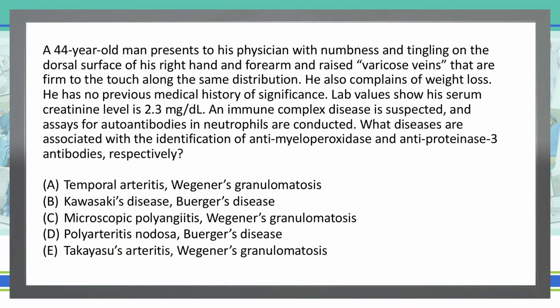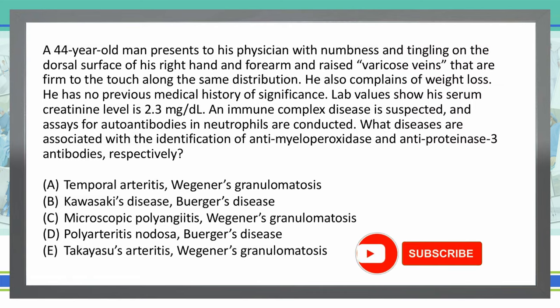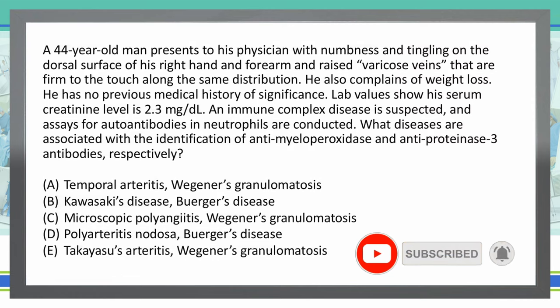As always, we start with the last sentence of the vignette and then go back and read the rest. What diseases are associated with the identification of anti-myeloperoxidase and anti-proteinase 3 antibodies, respectively? Now, you could probably stop here if you know the answer to these two — they immediately go into your question — but let's go ahead and read the vignette and see if it gives us some more information.